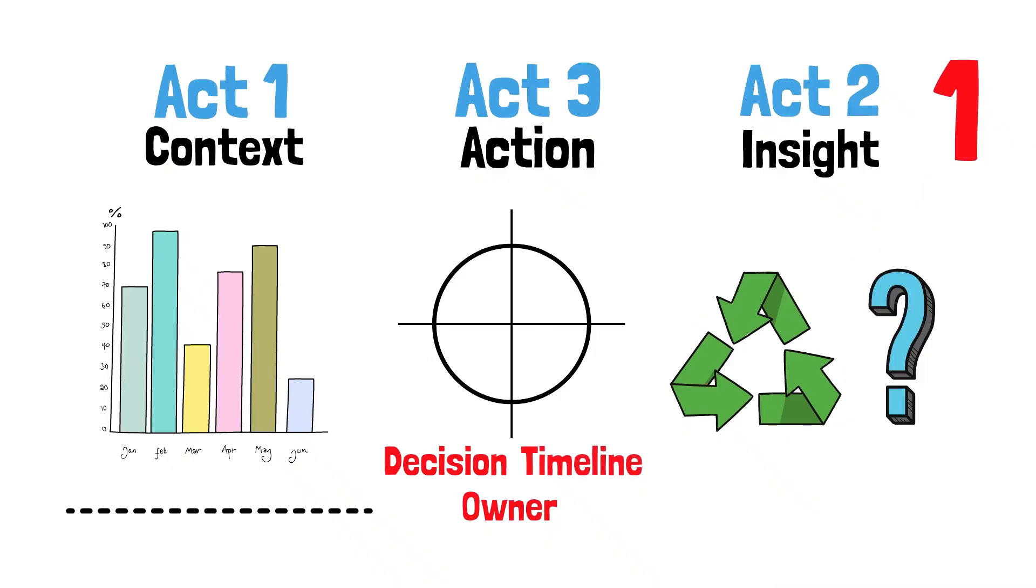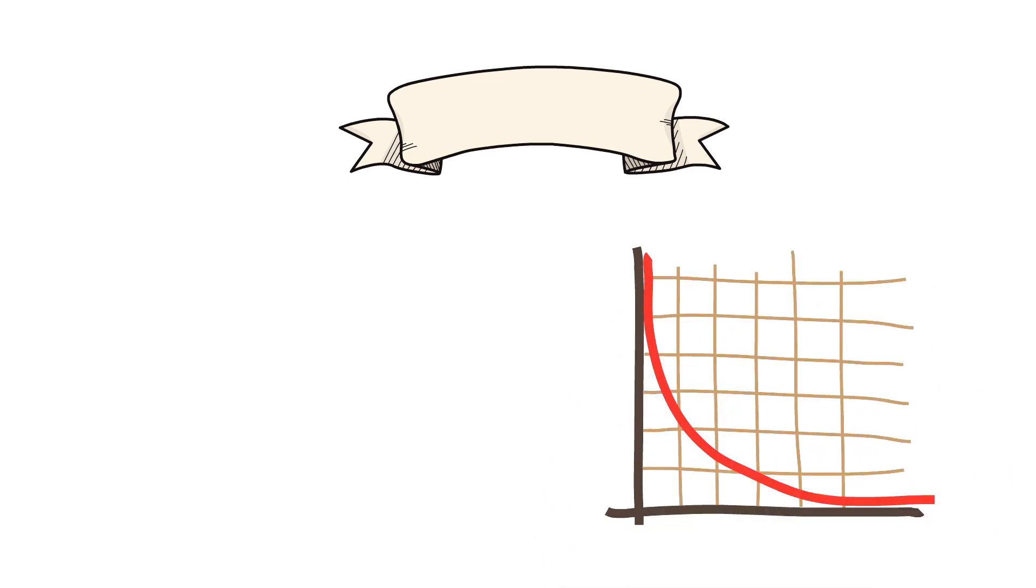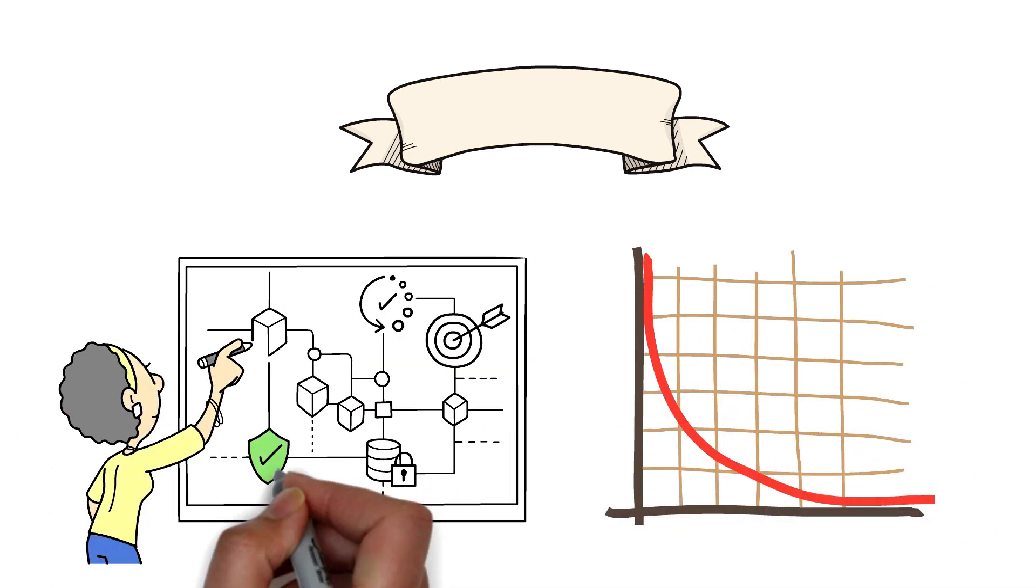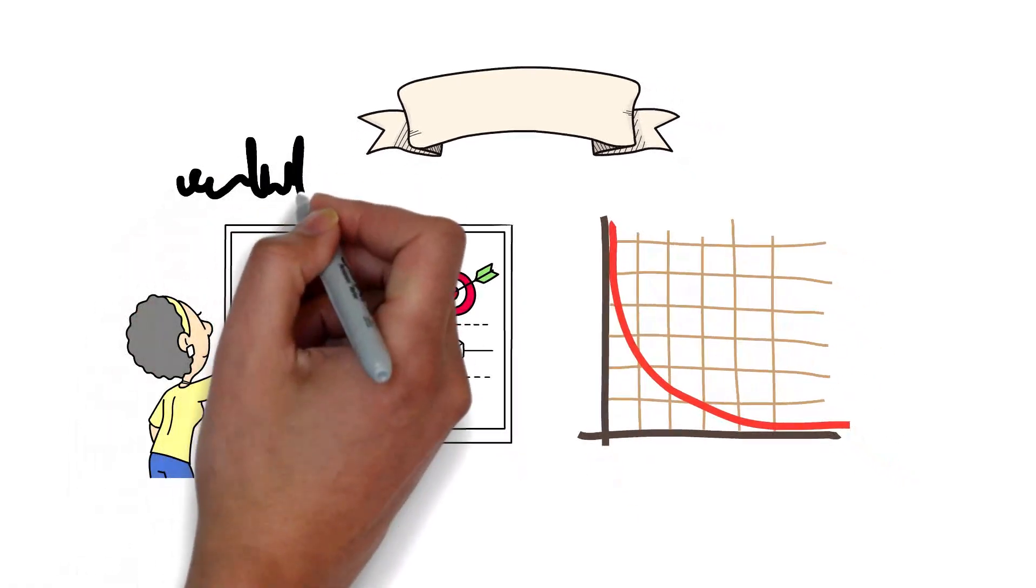Keep a one-idea-per-slide rule. Write the takeaway as your title. Retention drops after week two. Use call-outs, arrows, and short notes to show the proof. If the slide can't stand alone, rewrite it.